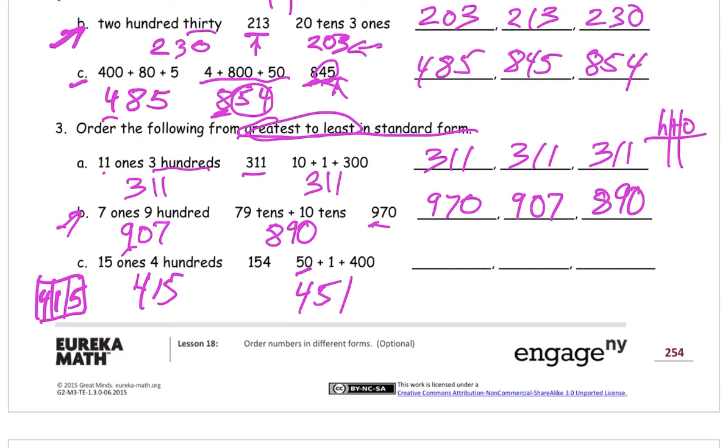So the greatest of these is, we're looking at the hundreds. Those are tied. This has more tens. Five tens versus just that. So this is the greatest one. 451. And then the 415 is in the middle. And the least is the 154. Because it only has 100.